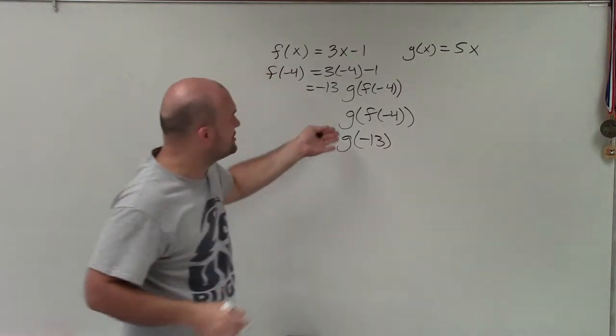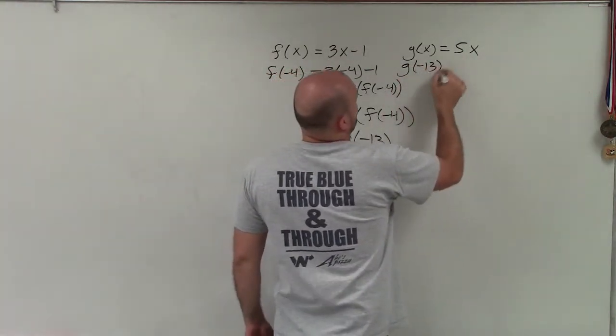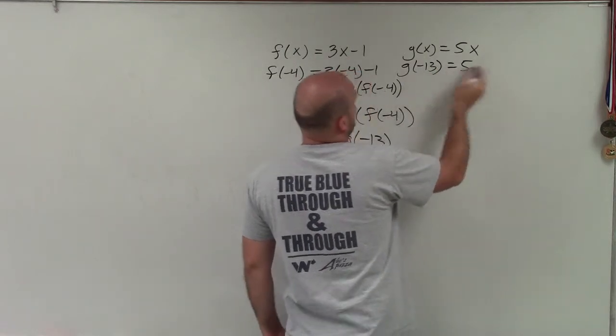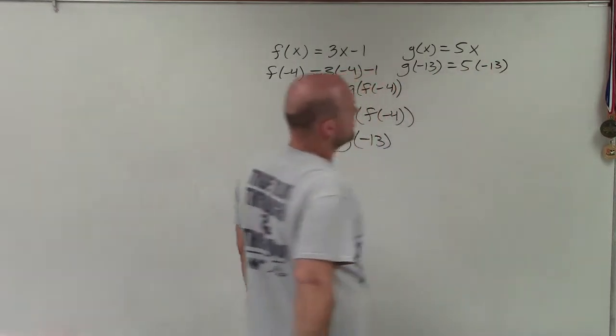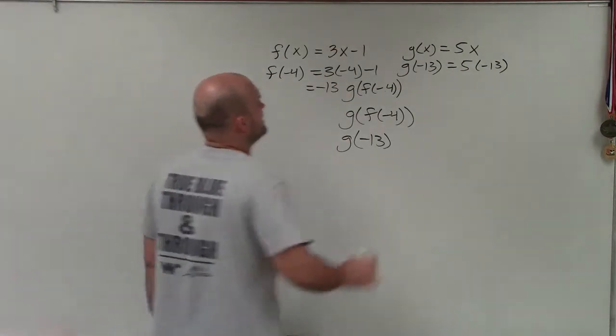So now I need to evaluate my g of x function for negative 13. I just plug negative 13 in for x. So that's going to be negative 65.